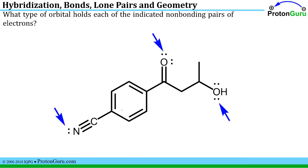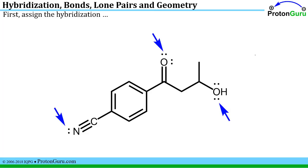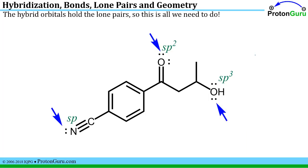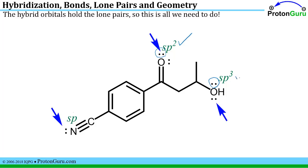Using the same rationale, we can figure out what type of orbitals hold each lone pair. We first assign hybridization: an SP3 hybridized oxygen, an SP2 hybridized oxygen, and an SP hybridized oxygen. Since it's the hybrid orbitals that hold the lone pairs, we're essentially done — a lone pair on an SP2 hybridized oxygen is held in an SP2 orbital.